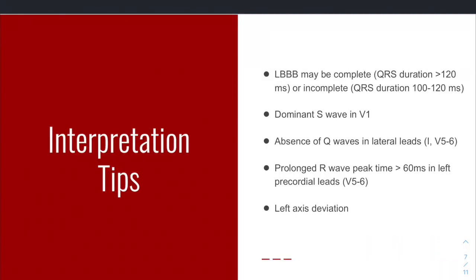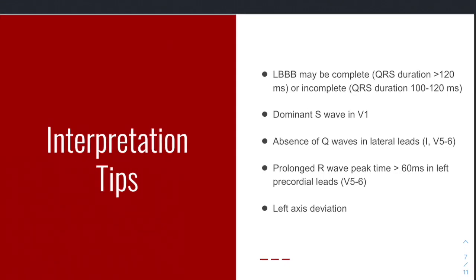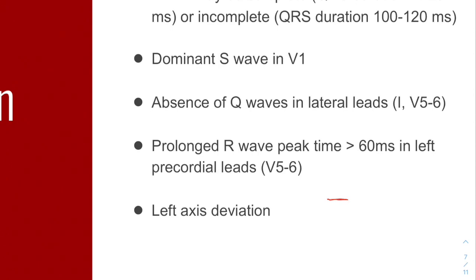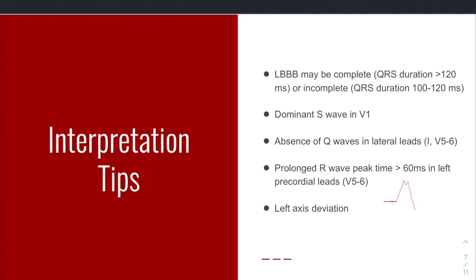What do you look for in left bundle branch block? Right off the bat, wide complex QRS — that occurs in complete bundle branch block, while incomplete bundle branch block has more narrow QRS complexes. You'll get a dominant S wave in V1, and you will lose Q waves in your lateral leads — lead I and V5 through V6. You also get a prolonged big R wave peak, and sometimes a notched M-shaped R wave in the lateral leads, which is consistent with left bundle branch block. Left axis deviation can also occur.